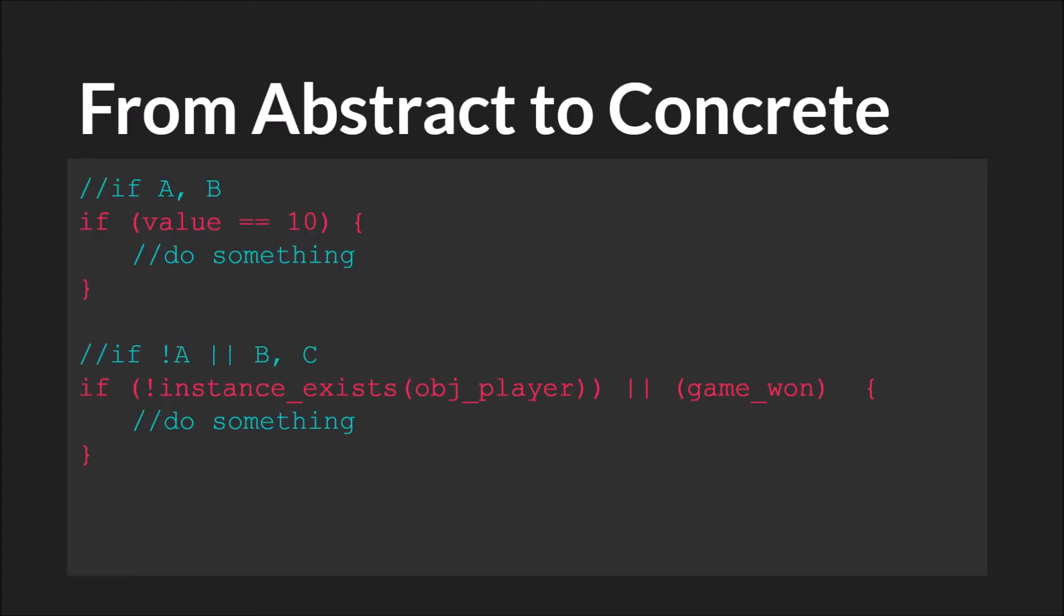Let's move from the abstract algebraic notation to the concrete actual code. Here we have if A then B. But note that A is a full expression. So A in this case is value equals 10. This whole thing is A. So we're evaluating the truth of this statement. If it is true, then we're going to do this.